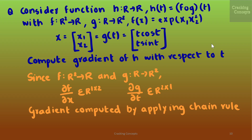We will see an example of the application of the chain rule. We consider the function h mapping from ℝ to ℝ, where h(t) = f(g(t)), with f mapping from ℝ to ℝ, g mapping from ℝ to ℝ², f(x) = exp(x1 · x2²), x = [x1, x2]ᵀ, and g(t) = [t cos t, t sin t]ᵀ. We need to compute the gradient of h with respect to t.